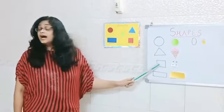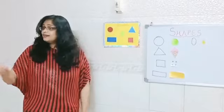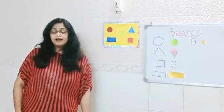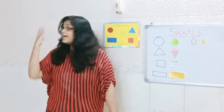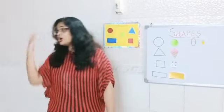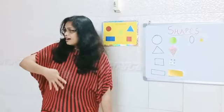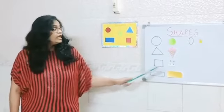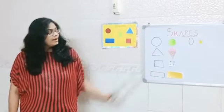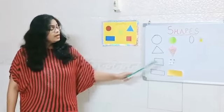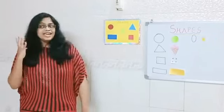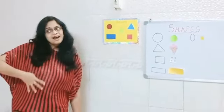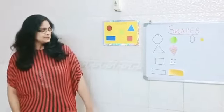I am a square. I am a square. I have four sides. We are a square. We are a square. We have four sides.